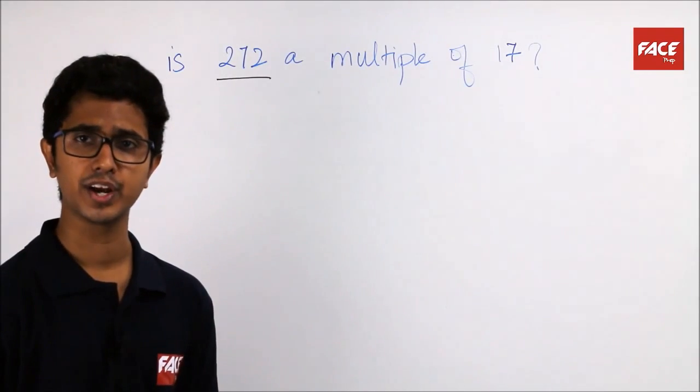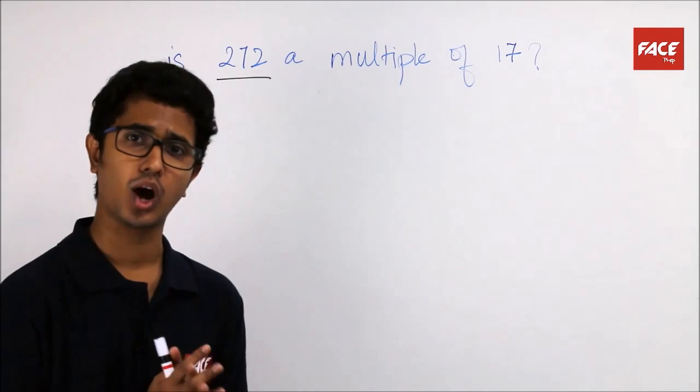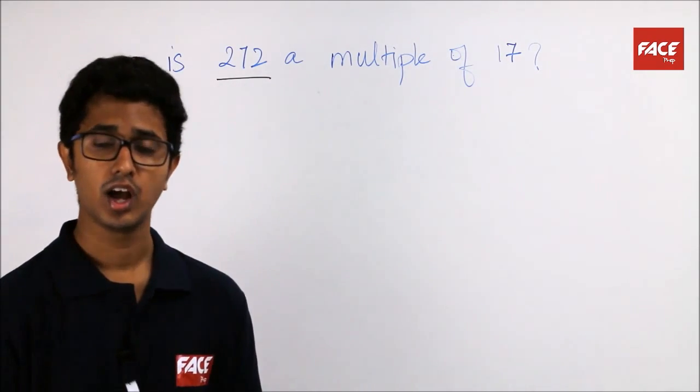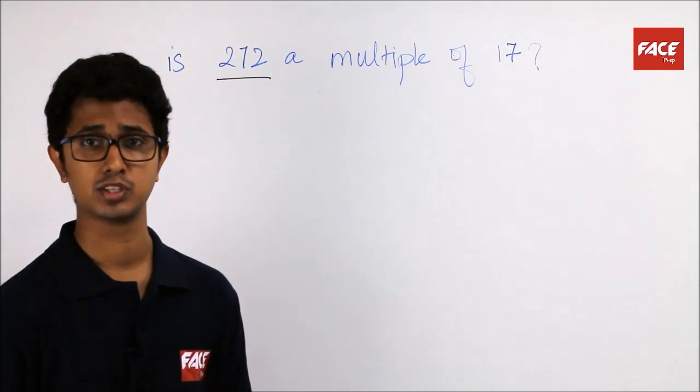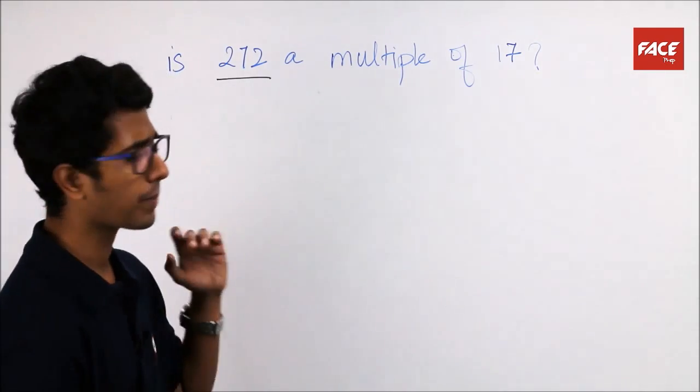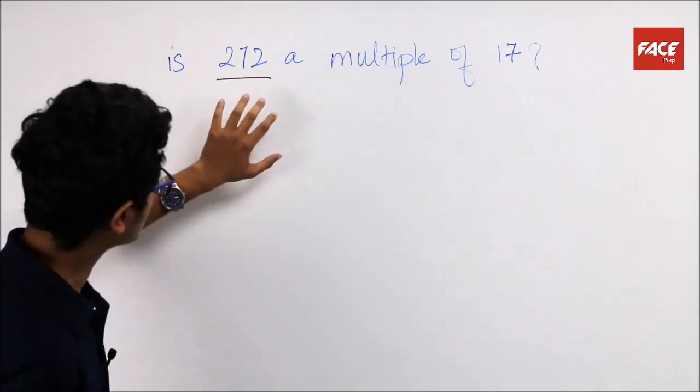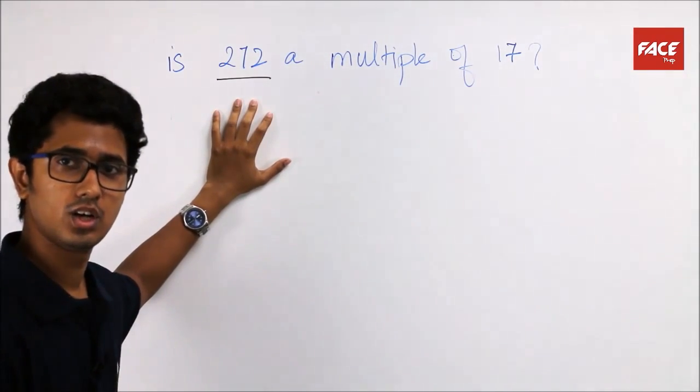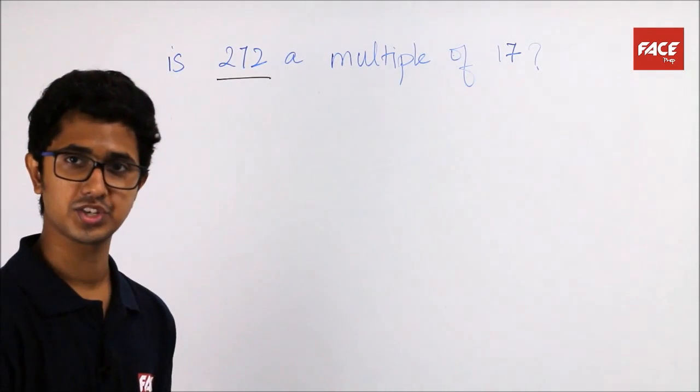The next type of question that we are going to look into are simplification type questions. Most often in examinations, they always try to ask you if a particular number is divisible by this particular number or not. And the number with which you are going to use might be a prime number which you do not know the tables of. So, it will get a little difficult for you to find out whether a particular number is divisible by that number or not. This is a similar kind of question: Is 272 a multiple of 17? How will you find it out? Assuming you don't know the tables of 17, how will you do it? This is a little tricky question.